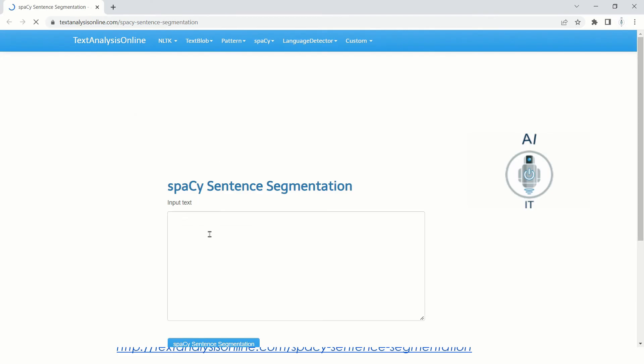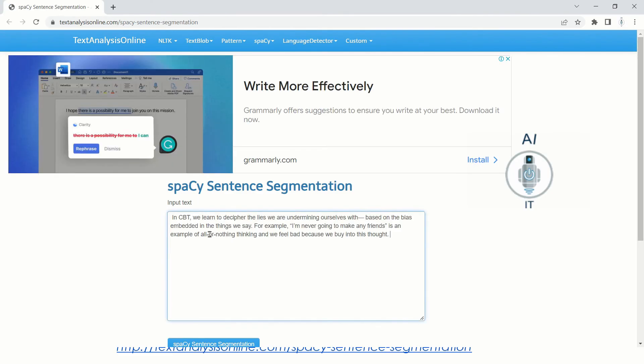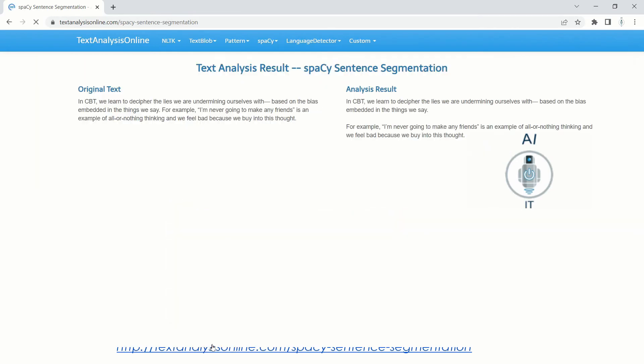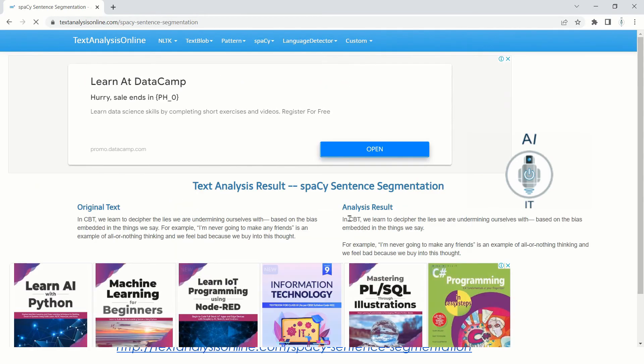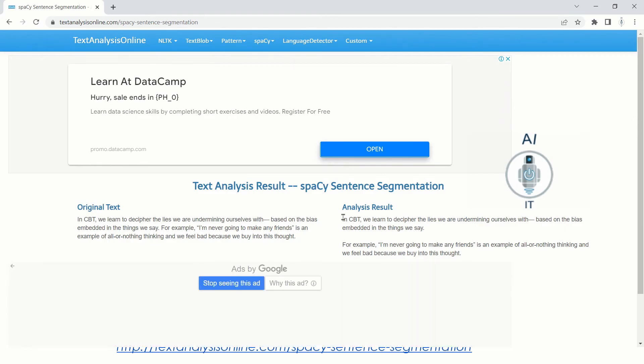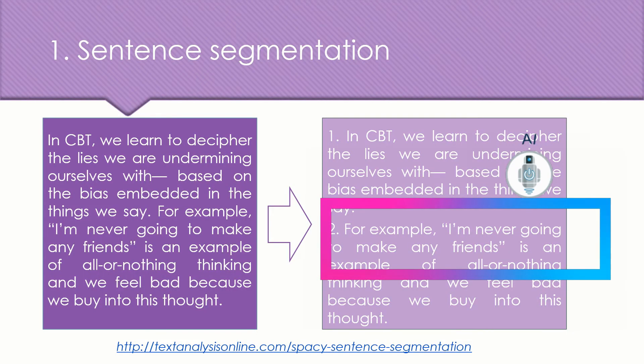Let me click on this particular link which is given in the book and this will open up the website. Now, here I am going to give the same sentence as given in the textbook and see how this is getting segmented. Now, as we see in the example, the same way here, we find that the paragraph has got segmented into two different sentences.